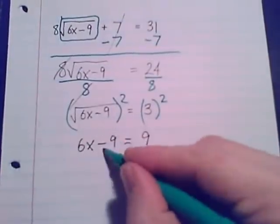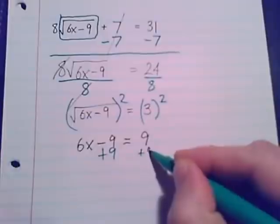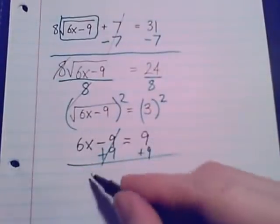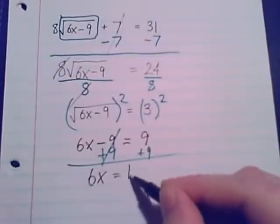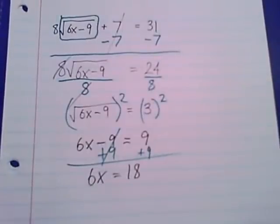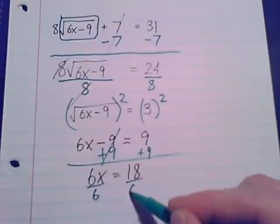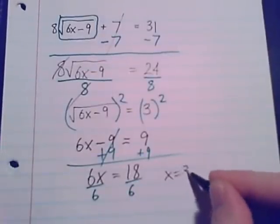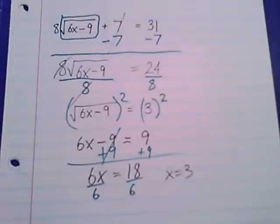And let's finish solving this one up. We'll do an add 9 both sides. Cancel. We've got 6x equals 18. And then the divide by 6. Alright, x equals 3.